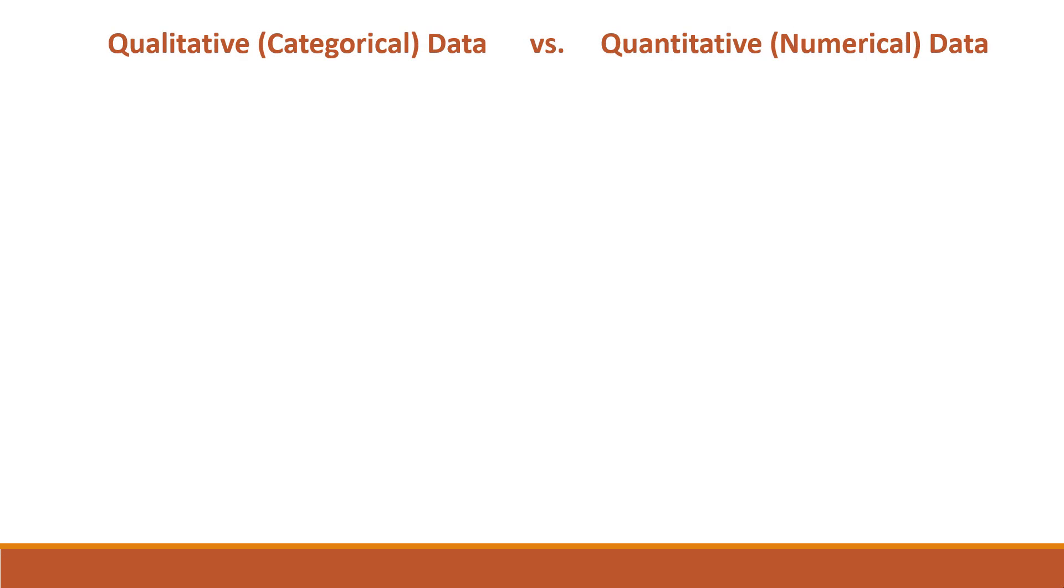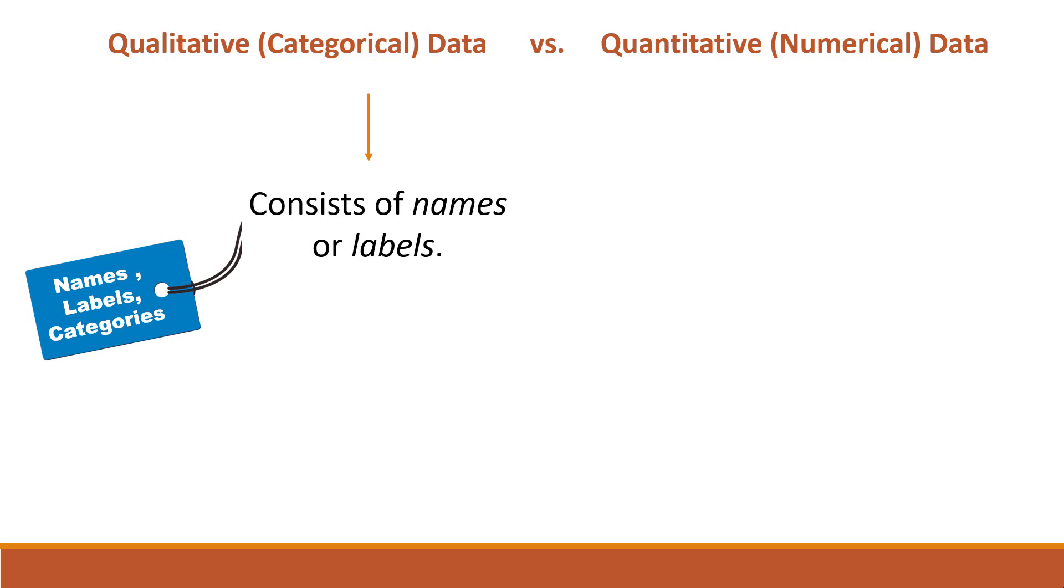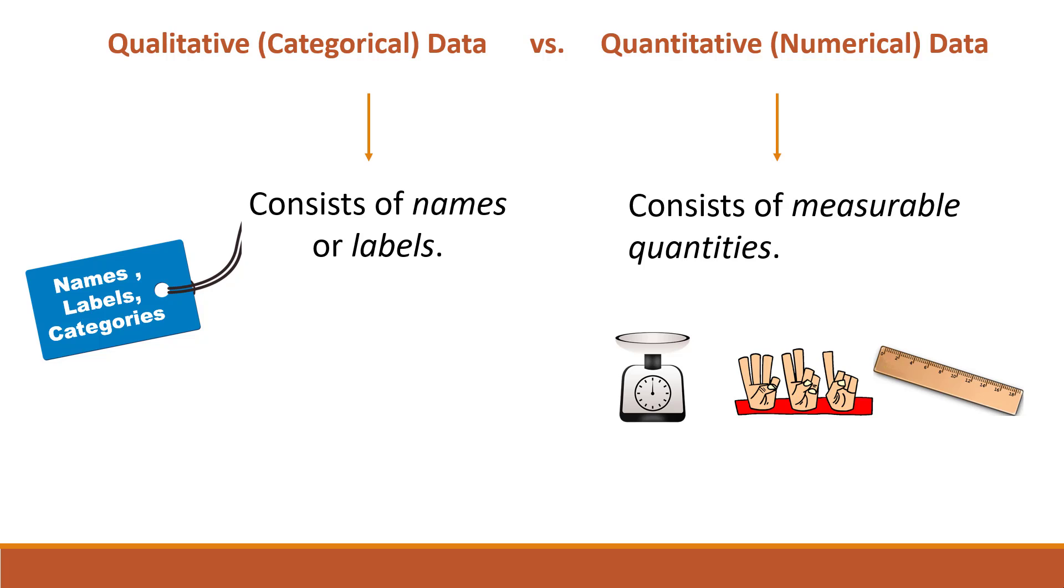The difference between qualitative and quantitative data is the following. Qualitative data consists of names, labels, or categories. On the other hand, quantitative data consists of measurable quantities. It's going to be easier to understand the difference between these two types of data if we look at the examples.